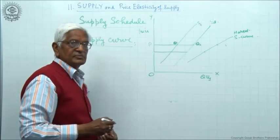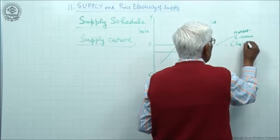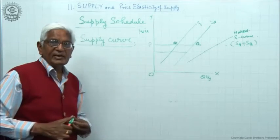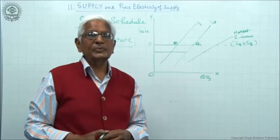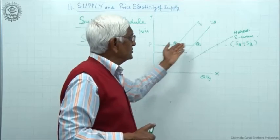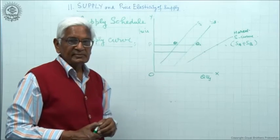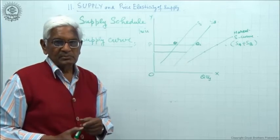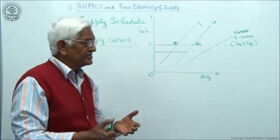Market supply curve, which is nothing but sum of SA plus SB. So if you get a question on derive market supply curve, then you start with the assumption suppose there are only two producers, and the supply curve of the two producers are SA and SB. Then you say, by joining horizontally, give the description of a step.